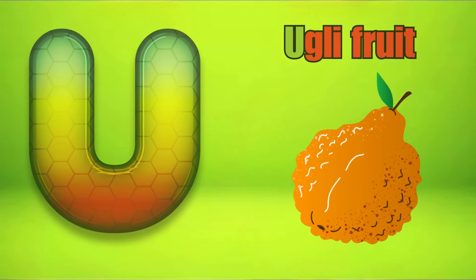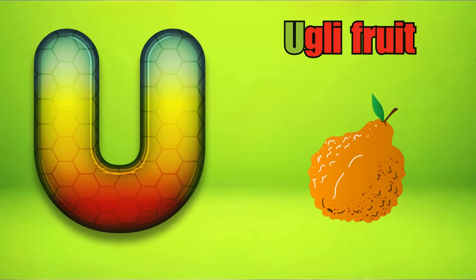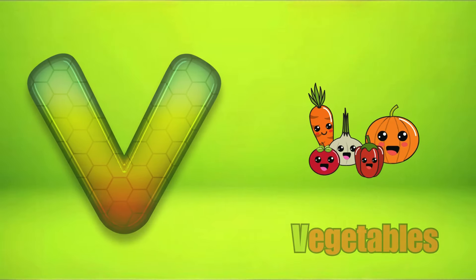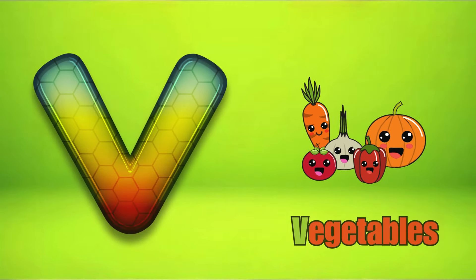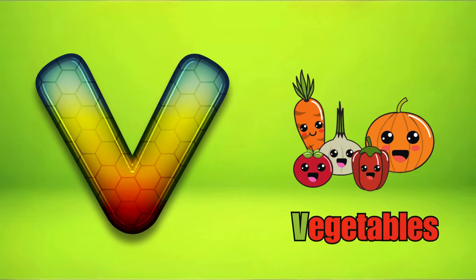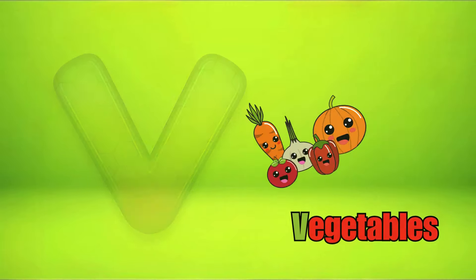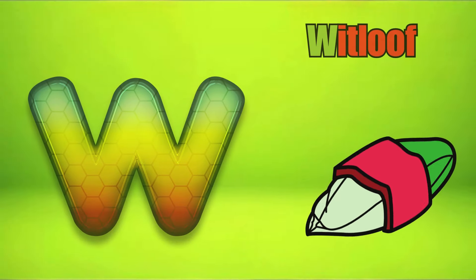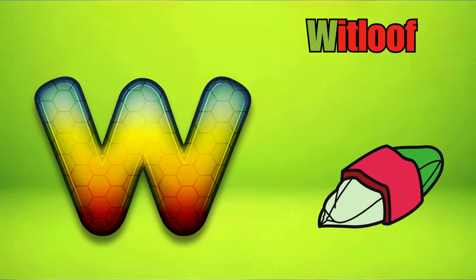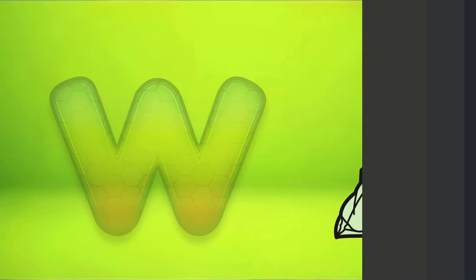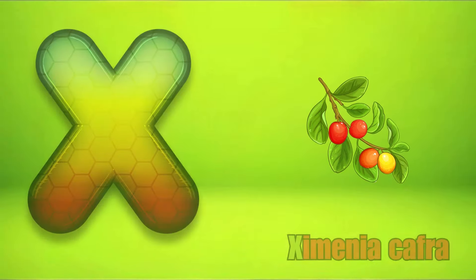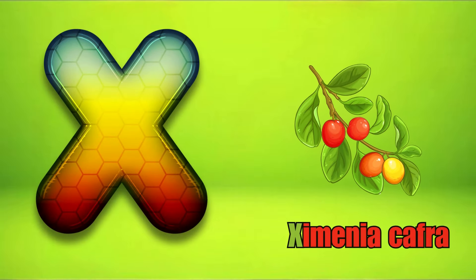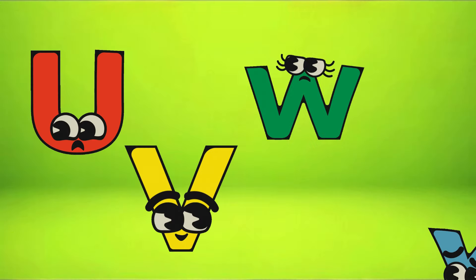U is for Ugly Fruit, U, U, U, Ugly Fruit. V is for Vegetables, V, V, Vegetables. W is for Whitloaf, W, W, Whitloaf. X is for Zymenia Caff, Z, Z, Zymenia Caff.